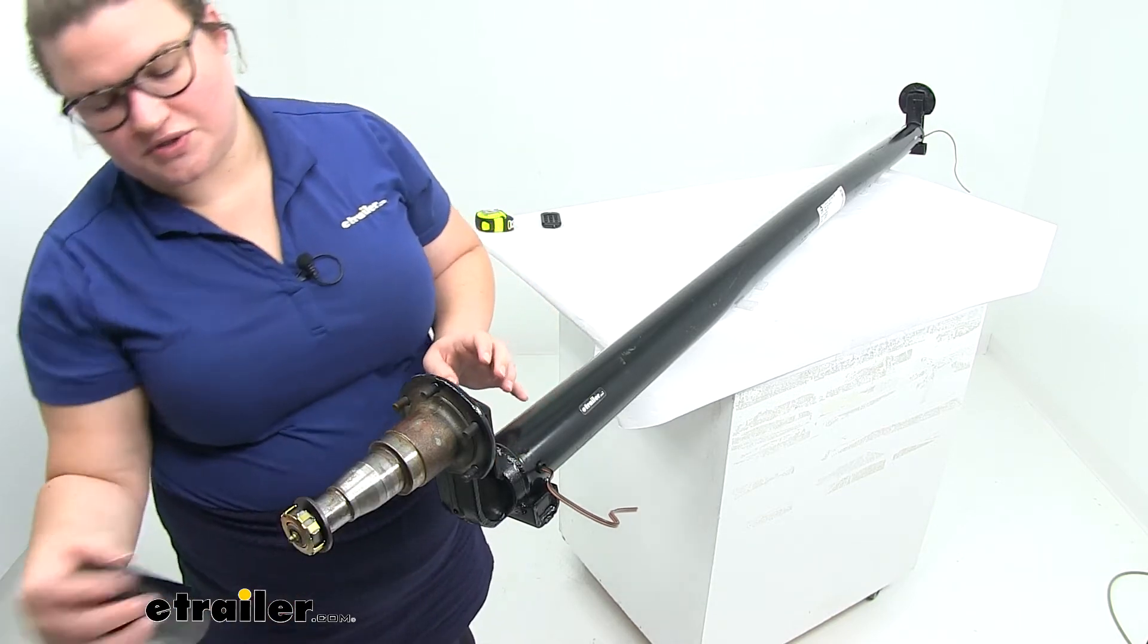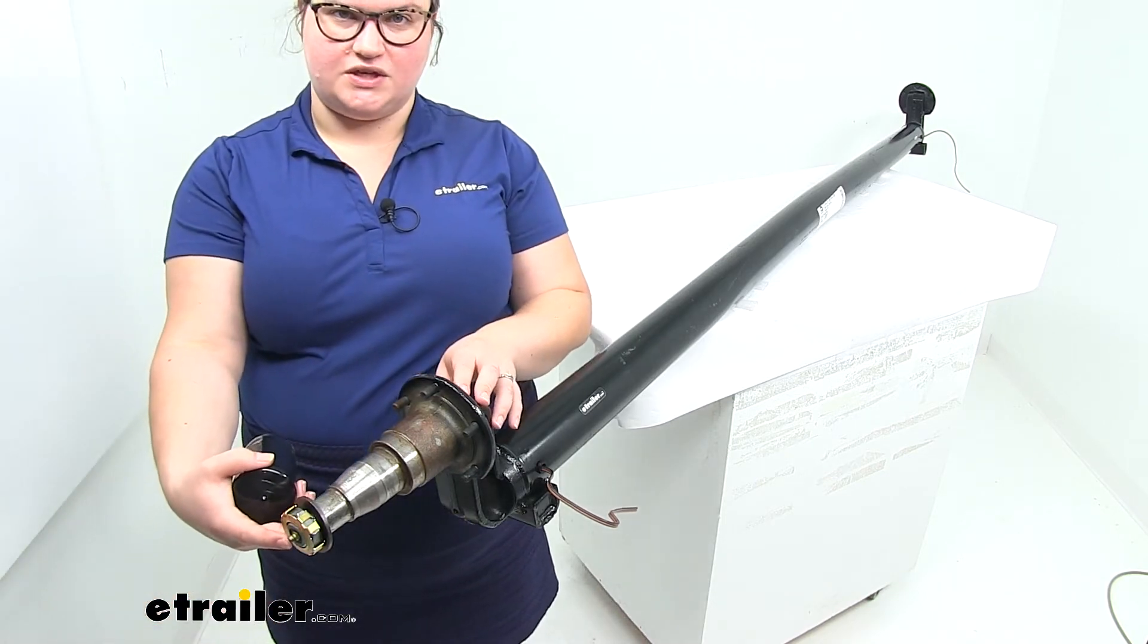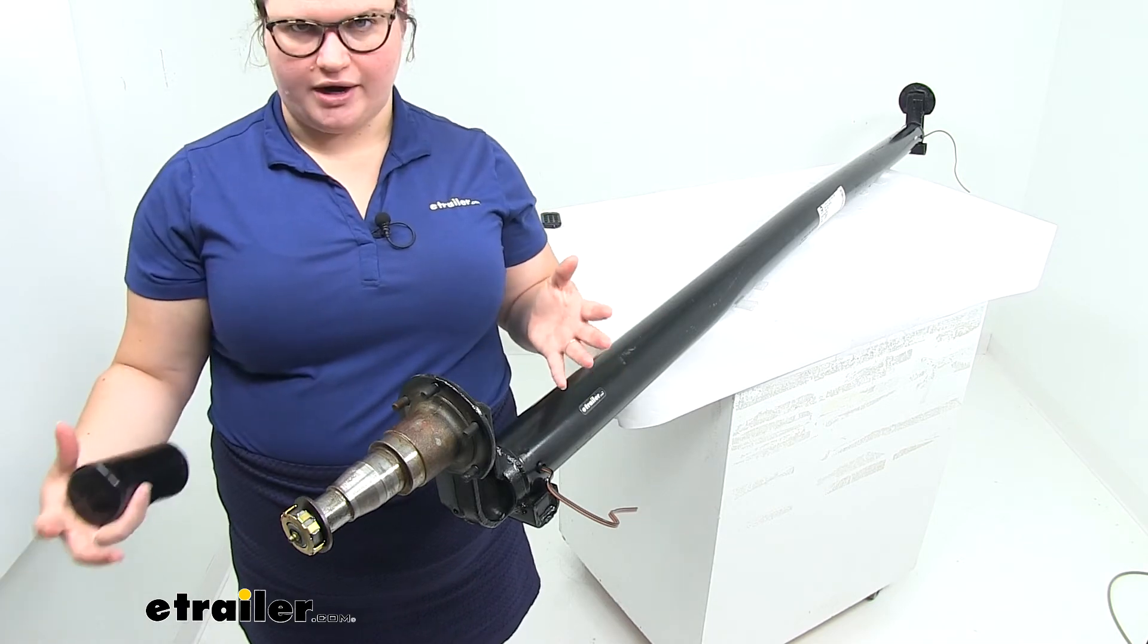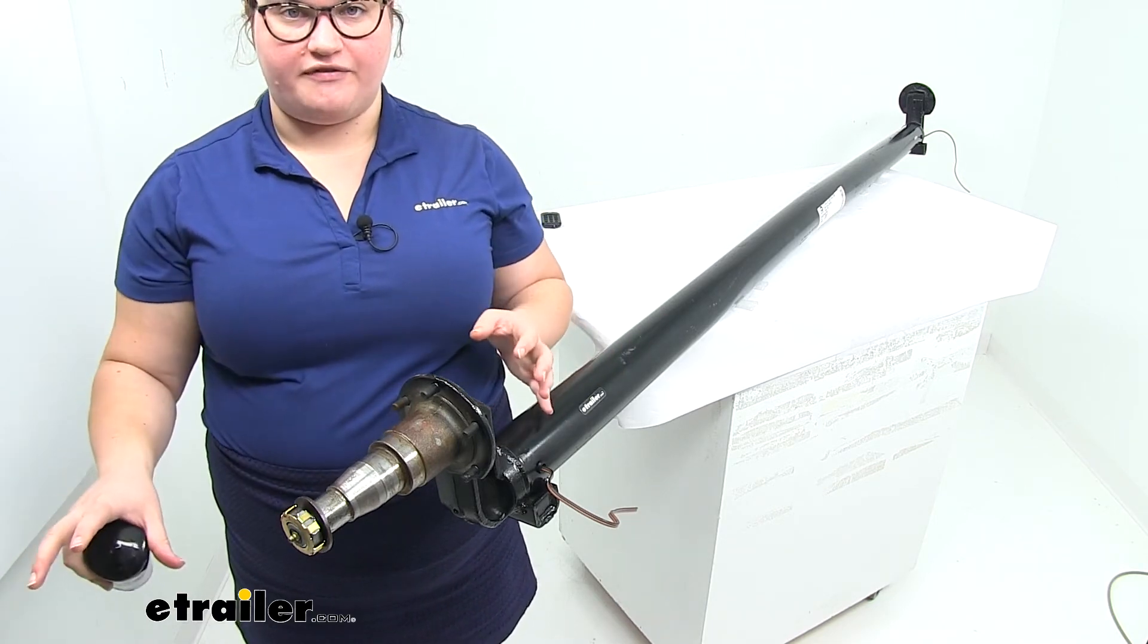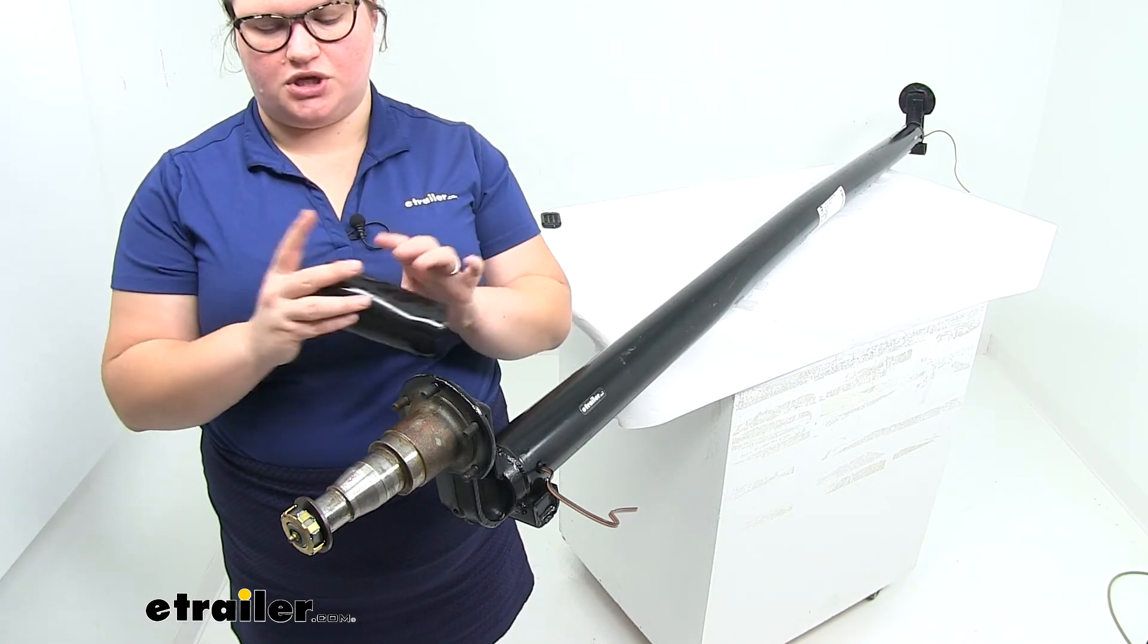And you can also see the grease zerk on the end, so that's going to give us the easy lube application so you can lube this up without having to take the whole hub off every time to get your bearings greased up. So you can just put your grease gun on there, pump it up, and it's good to go.